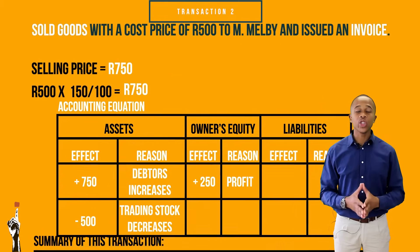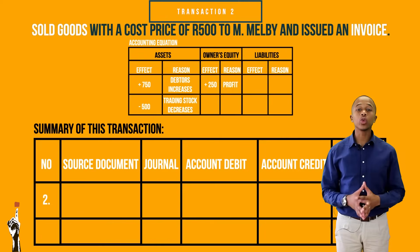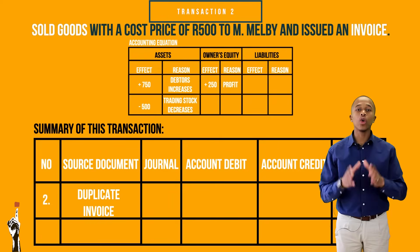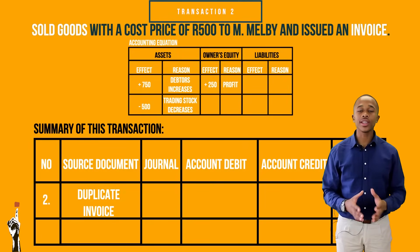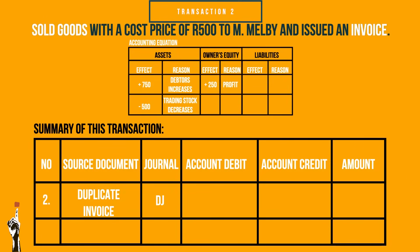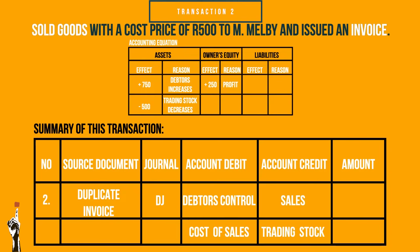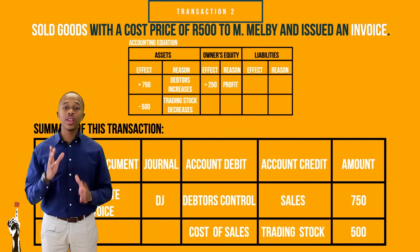Let's look at the summary of this transaction. The source document will be a duplicate invoice — remember, the original invoice is given to the customer. The journal where we will record this transaction is the DJ, the debtors journal. The four accounts influenced are debtors control and cost of sales, which will be debited, and sales and trading stock, which will be credited. Sales and debtors control amount will be the selling price of R750, and cost of sales and trading stock will be the cost price of R500.